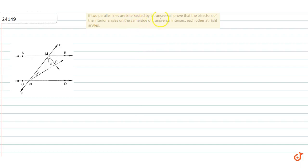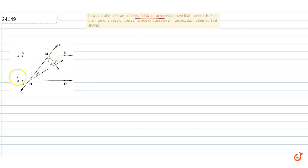The question is: if two parallel lines are intersected by a transversal, prove that the bisectors of interior angles on the same side of the transversal intersect each other at a right angle. We have two parallel lines AB and CD, and a transversal line FE that intersects both lines at point M and point N. We have to prove this.